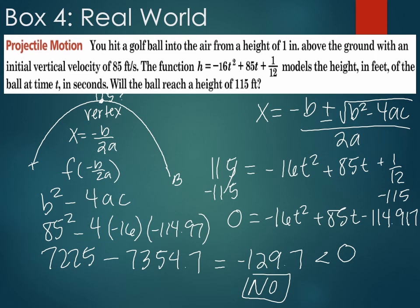In the calculator, 85 squared - either you can write 85 times 85 or 85 squared if it has a square button. So 85 squared is 7,225. And then now I'm going to multiply these numbers. I'm going to multiply -4, so I press 4, make it negative, times 16, press negative, make it negative, times 114.917, and make that negative. Hit enter and I get -7,354 points.